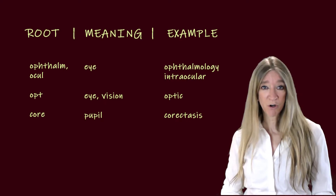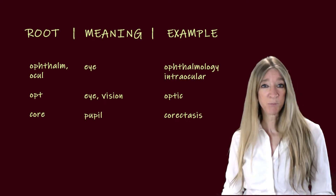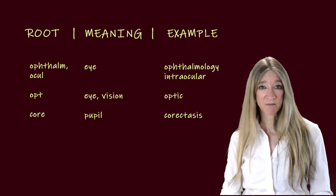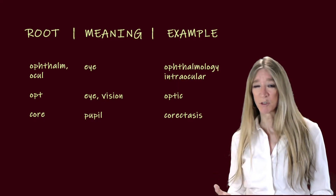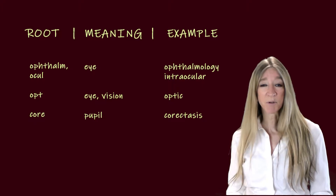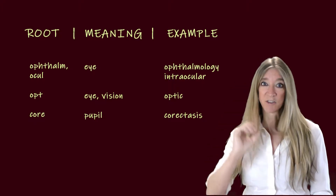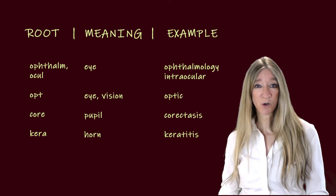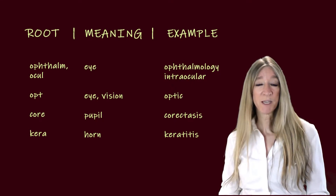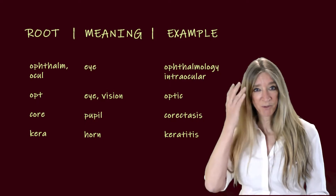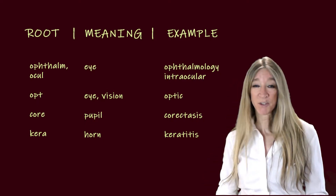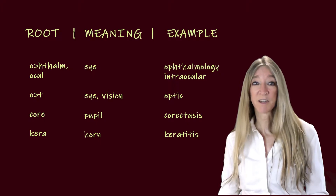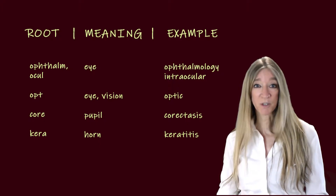The next root, core, meaning pupil. An example is coreectosis — that's obviously some sort of abnormal condition of the pupil; it happens to be morbid dilation. The next roots, kera and corn, both meaning horn — something tough. Examples are keratitis, and cornea. Keratitis being inflammation of the cornea.